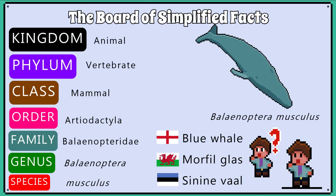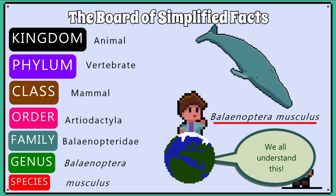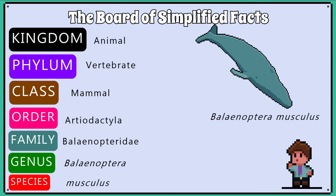An English speaker, for example, would not know what a local name in another language refers to, so if all biologists writing a scientific paper use the scientific Latin name, there is no confusion as to what species is being discussed. Looking at the scientific naming structure, we can see that we combine the genus and species category to name the organism.